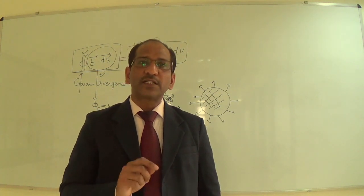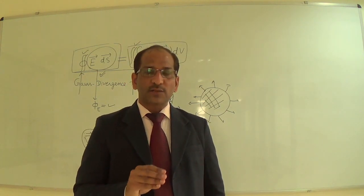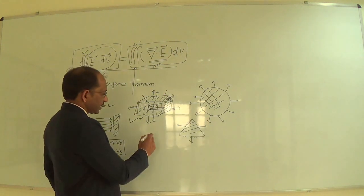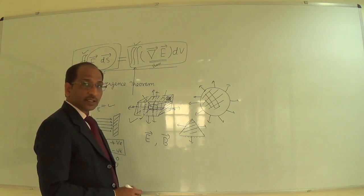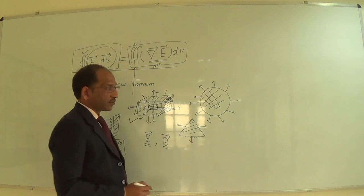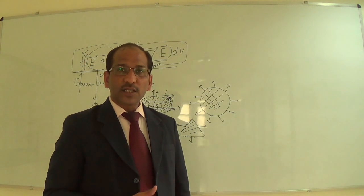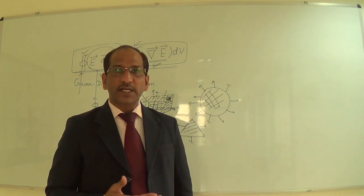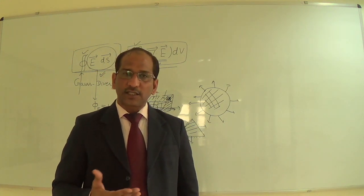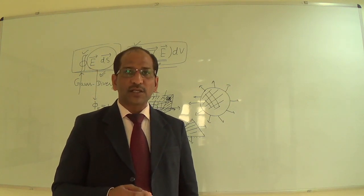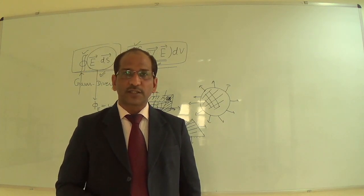One more important point: E and B are commonly called electric field and magnetic field, but in reality they are electric field density and magnetic field density respectively. When you say density, the meaning is clear — you are measuring the total number of electric field lines or magnetic field lines. This was the only point. Thank you.